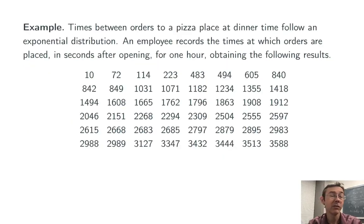Okay, let's put some specific numbers to this example. Suppose that we have an employee measuring waiting times, or we're measuring times at which orders are placed at a pizza place, in seconds after opening for one hour. So the first order comes in 10 seconds after they open, the second one comes in 72 seconds after they open, and so on.